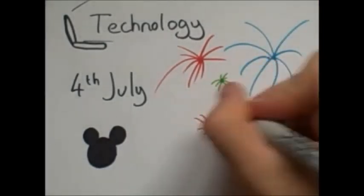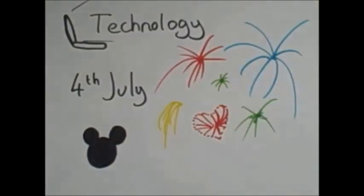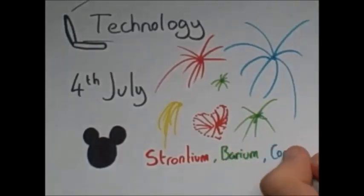Different metals create different colors. For example, strontium gives a red color, barium gives us a green color, and copper gives us a blue. Then we can mix these together to make any color we want.